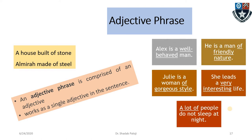Examples of adjective phrases: 'Alex is a well-behaved man' — 'well-behaved man' is the adjective phrase. 'He is a man of friendly nature' — 'of friendly nature' tells what kind. 'Julie is a woman of gorgeous style' — 'of gorgeous style' is the adjective phrase. 'She leads a very interesting life' — 'very interesting' qualifies the life she leads. 'A lot of people do not sleep at night' — 'a lot of' is an adjective of quantity.